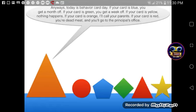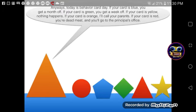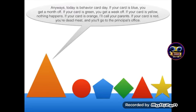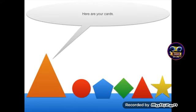Anyways, today is Behavior Card Day. If your card is blue, you get a month off. If your card is green, you get a week off. If your card is yellow, nothing happens. If your card is orange, I'll call your parents. If your card is red, you're dead meat, and you'll go to the principal's office. Here are your cards.